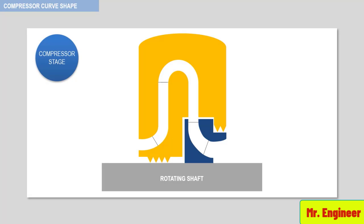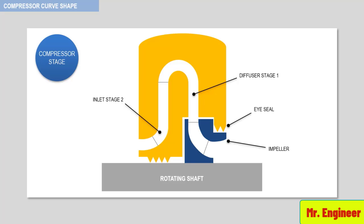A compressor stage is defined as one impeller, the stationary inlet passage, the discharge passage known as the diffuser as highlighted here, and the seals — namely the eye labyrinth seal and the shaft labyrinth seal.